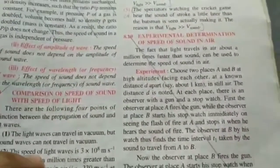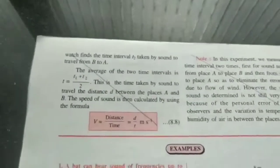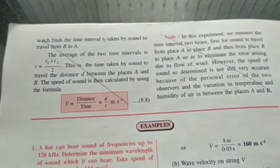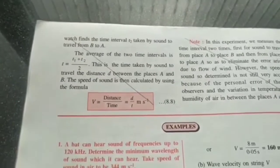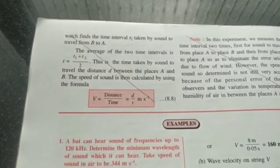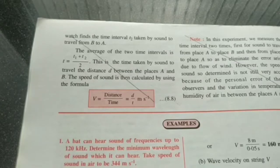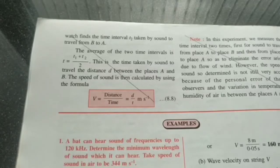There is an experimental determination of the speed of sound in air. You go to a mountain and fire a smoke gun, and ask a friend on another mountain far away to start a stopwatch when they see the smoke and stop it when they hear the sound. The distance between the two mountains can be found using a map, and speed = distance ÷ time.